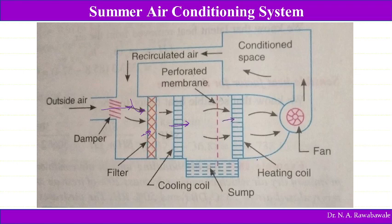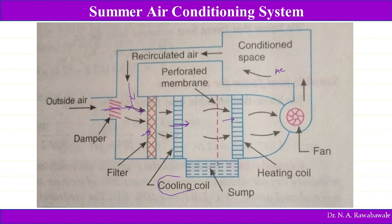The water particles present in the air get condensed and are removed by the perforated membrane, and the air is dehumidified. Then the dehumidified air enters the heating coil to increase its temperature to the required comfort level, because the temperature after the cooling coil is very low — below dew point temperature. The heating coil improves the dry bulb temperature to the required comfort temperature, and then the fan blows this air into the AC space. The water collected from dehumidification drains into the sump.